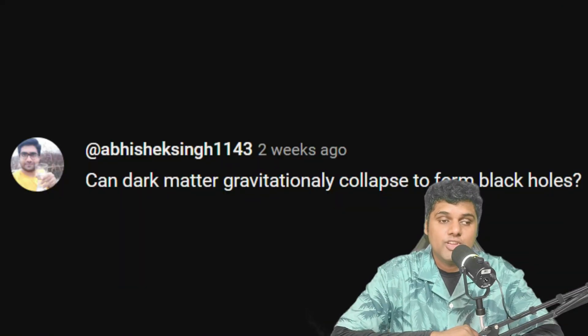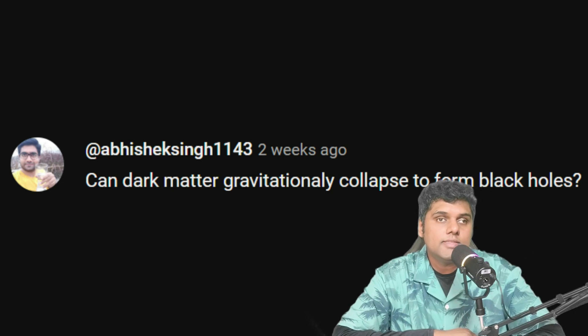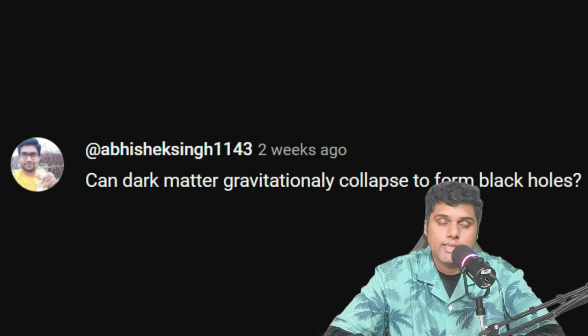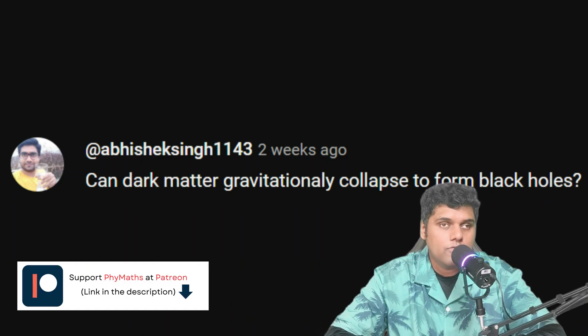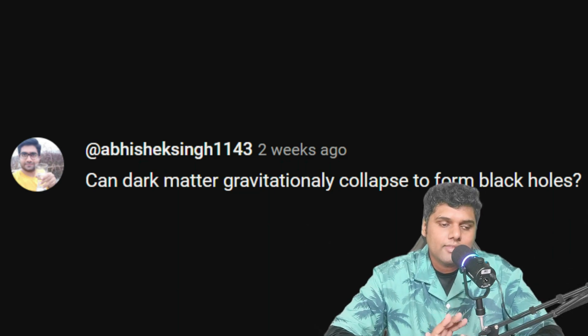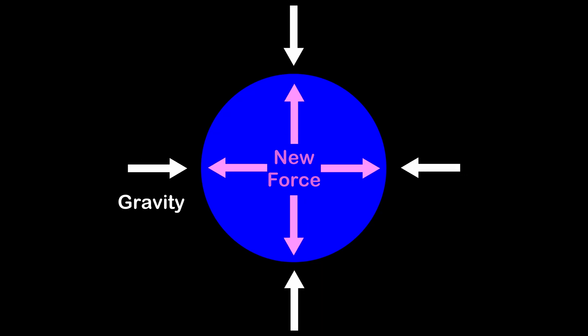The next question is from Abhishek Singh: can dark matter gravitationally collapse to form black holes? Since dark matter does interact gravitationally, yes, there can be dark matter black holes. One caveat: if there is some unknown force that dark matter interacts with at very small distances, it could counteract gravitational collapse — but there may be a limit analogous to the Chandrasekhar limit, beyond which that force cannot prevent collapse. There may be forces dark matter interacts with that we simply don't know about yet.